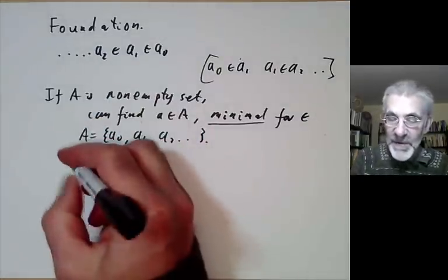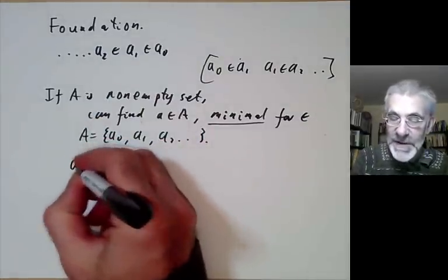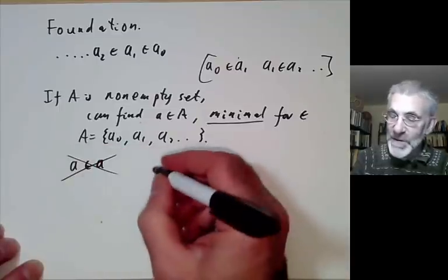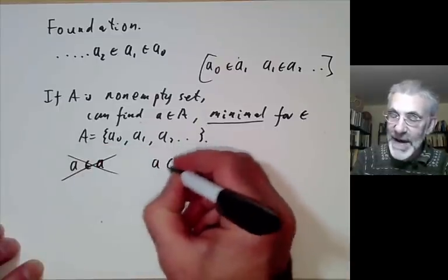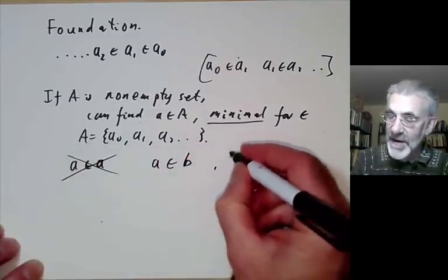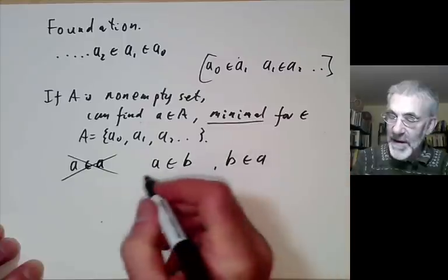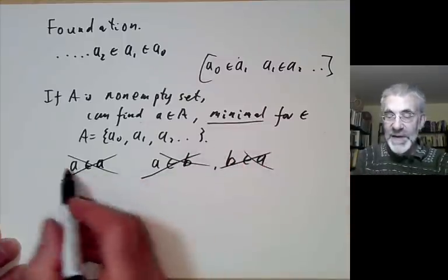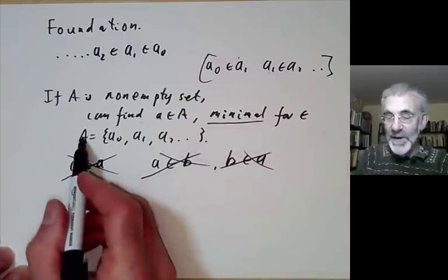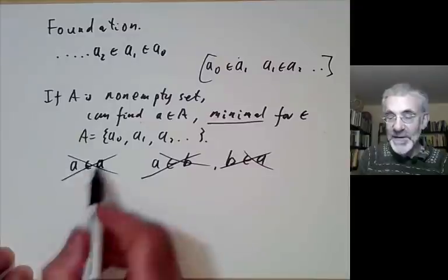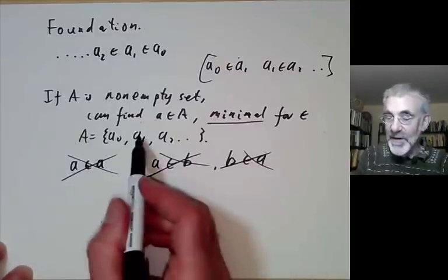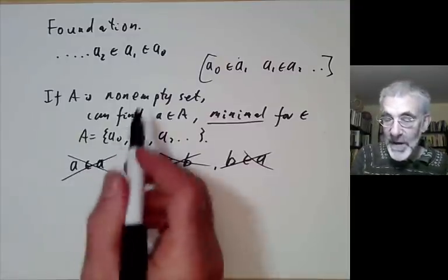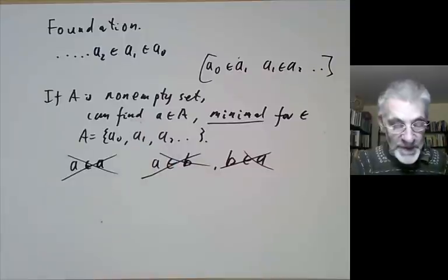In particular, the axiom of foundation rules out sets that are members of themselves, and it rules out things like pairs of sets such that a ∈ b and b ∈ a. In these cases you could take the set A to be just {a}, or the set consisting of a and b, and in both cases it would conflict with the axiom.